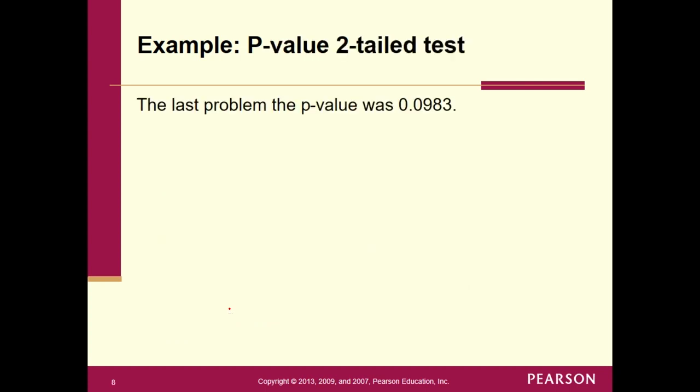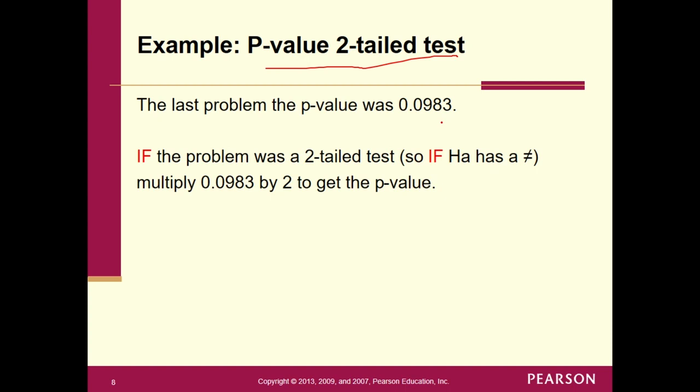All right. So hopefully that'll get you through another problem. Now I got one more slide. The last slide is that what happens if we have a p-value for two tail test. So the last problem, the p-value is 0.0983. Now, if the problem was a two tail test. So if HA had a not equal to sign, we didn't have it here. We had a greater than sign, but if HA had a not equal to sign, meaning we have a two tail test, what are we simply going to do? Remember what's happening here? Is that for a two tail test, you would have to figure out this tail and you would have to figure out this tail. Well, for the t distribution, that's exactly the same. So once you find one of the tails, you just multiply it by two or add it to itself.